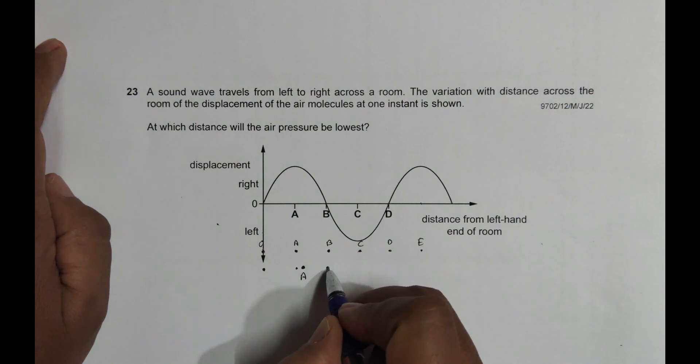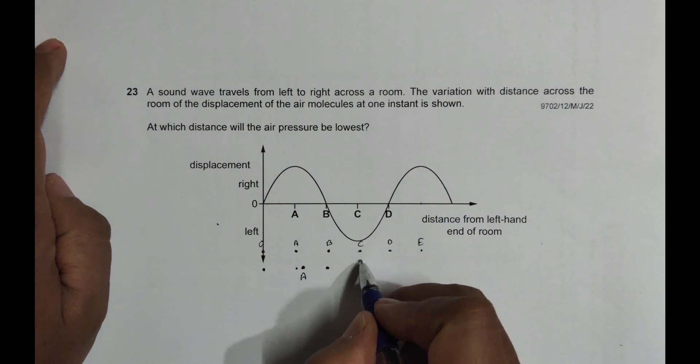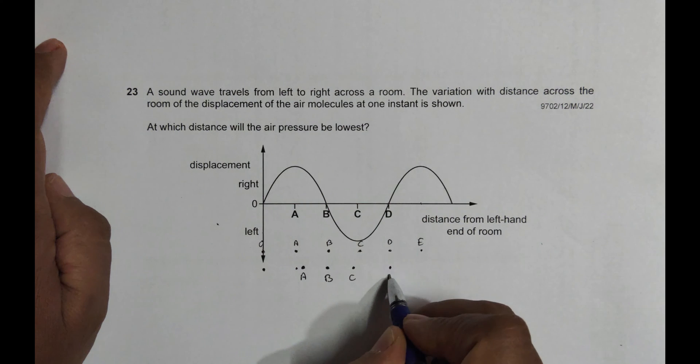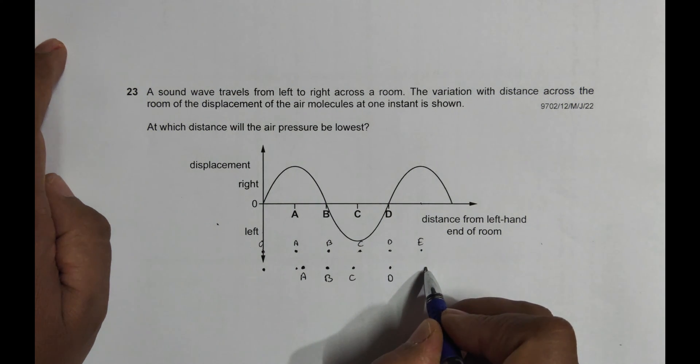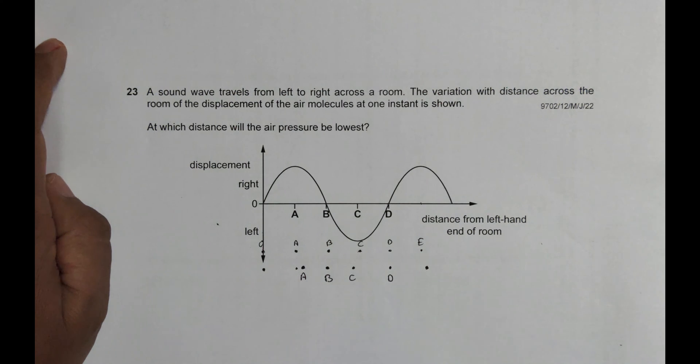C showing negative, so it should be here. This is C, this is B, and D is at normal position D, and then E should be showing displacement, so it should be around this area.